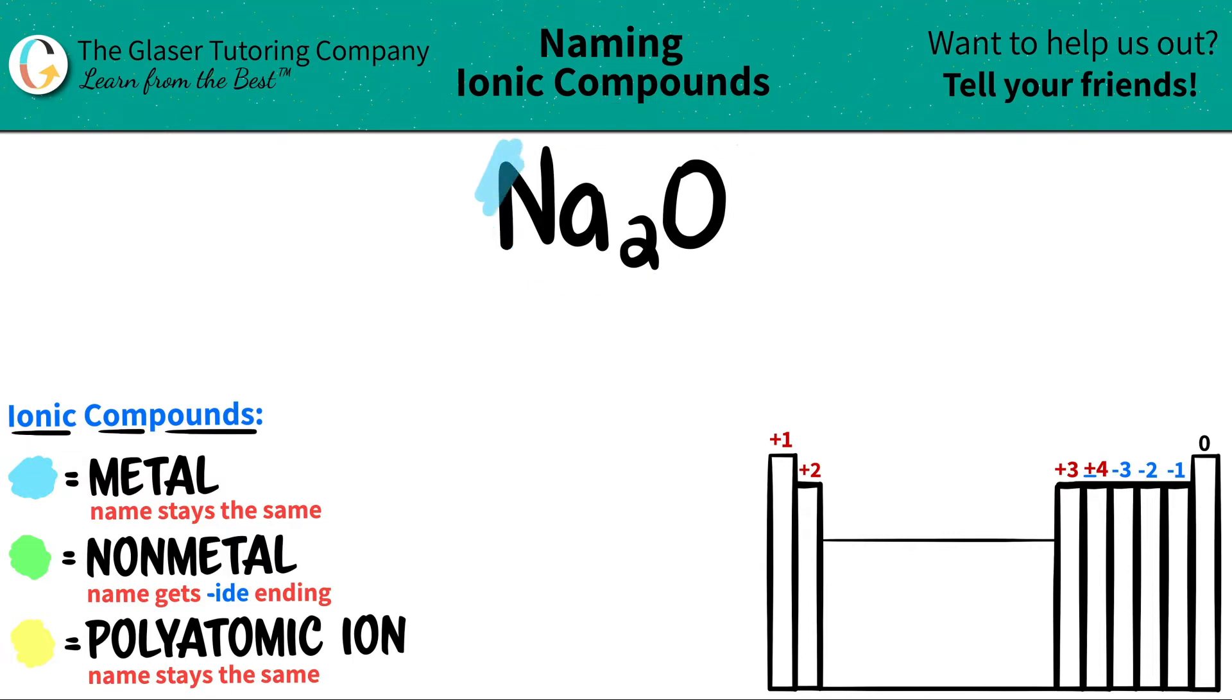So sodium, which is Na, is the metal because sodium is in group one.